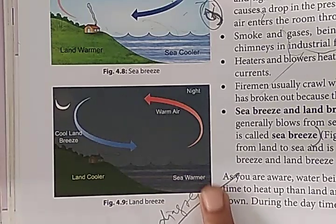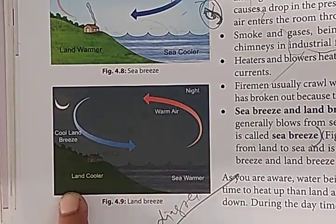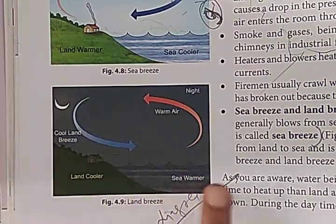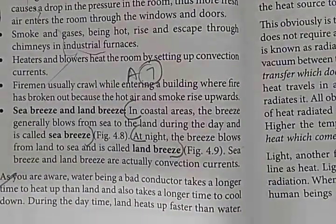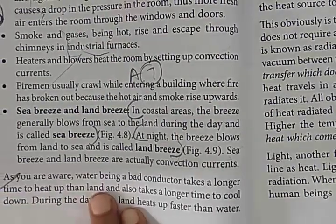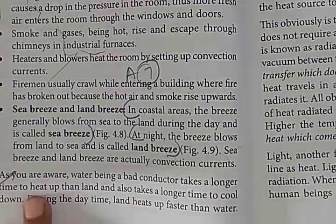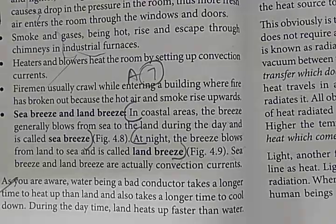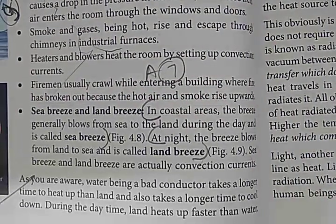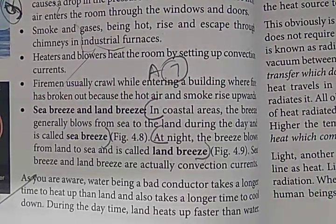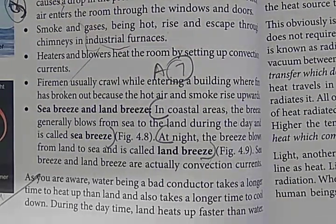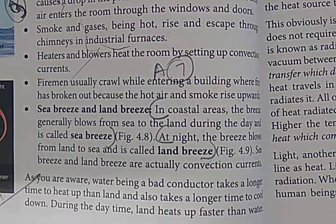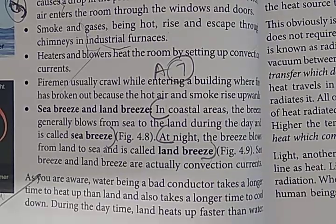At night, the warm air rises over the sea. The cold air from the land moves toward the sea, creating the land breeze. Water is a poor conductor, so the sea remains warm at night. This is why the land breeze blows from land to sea during the night.